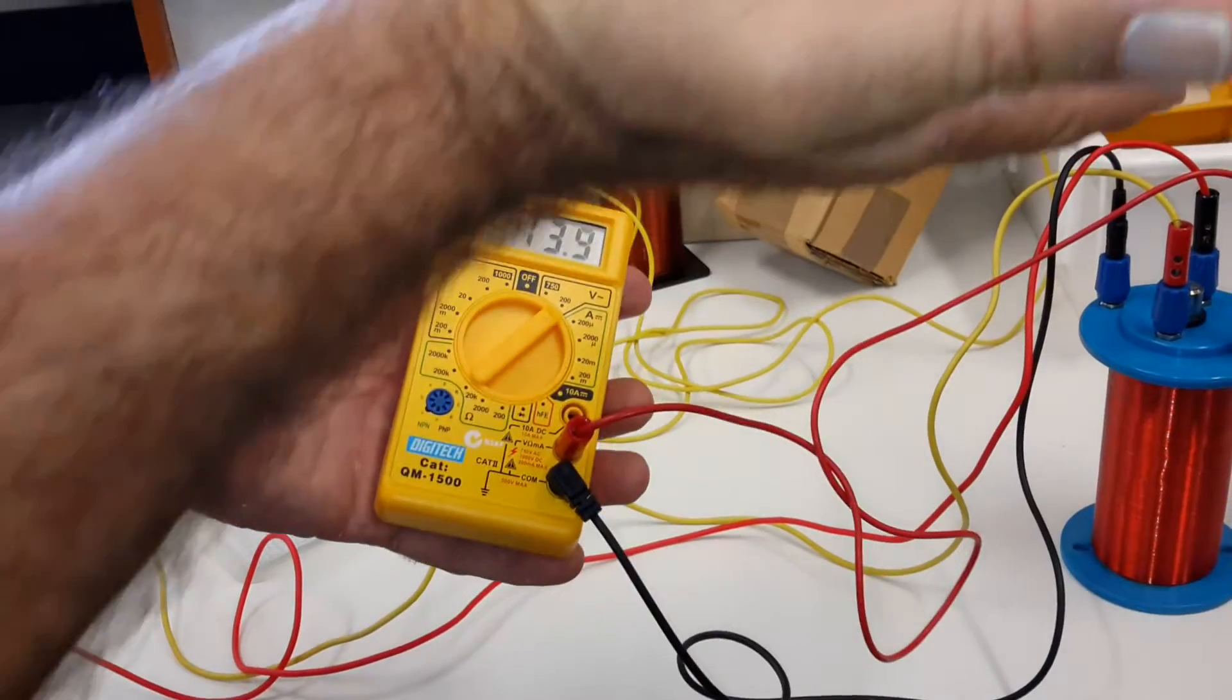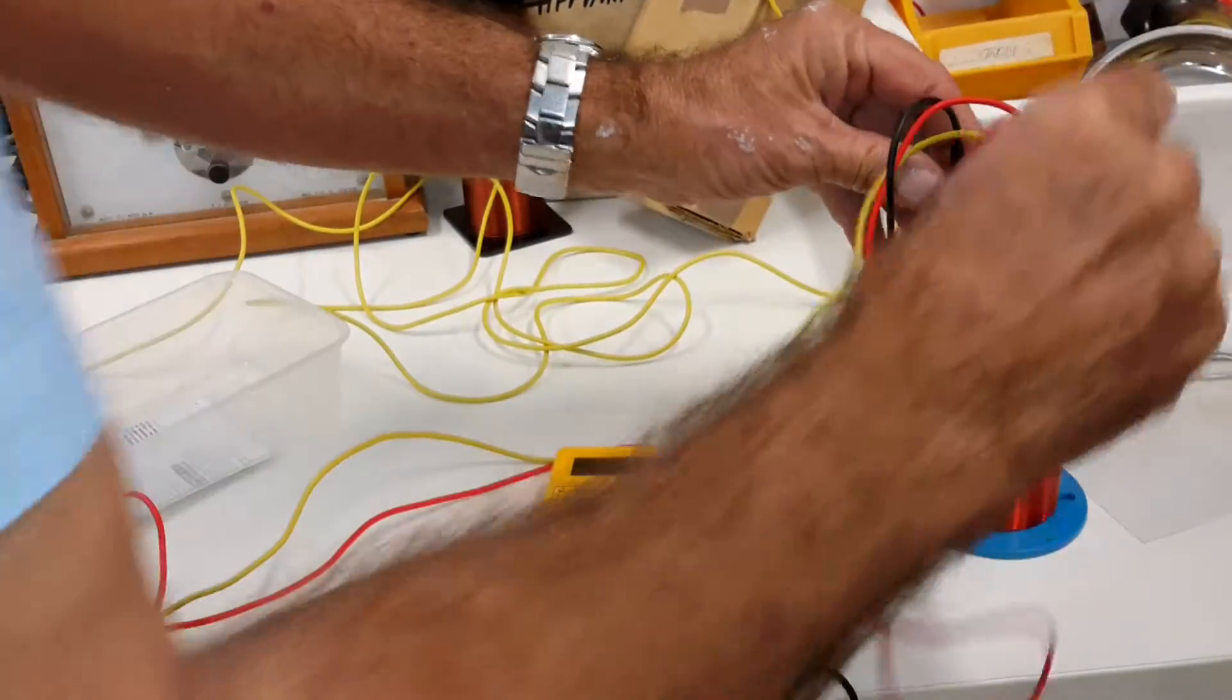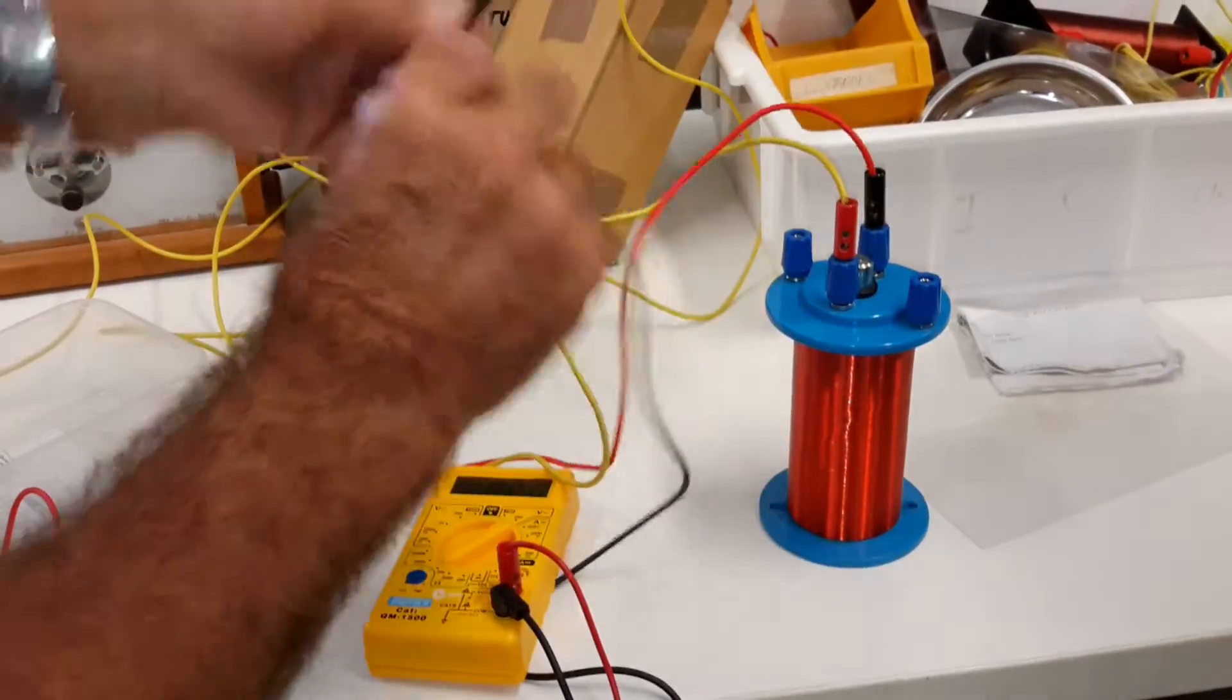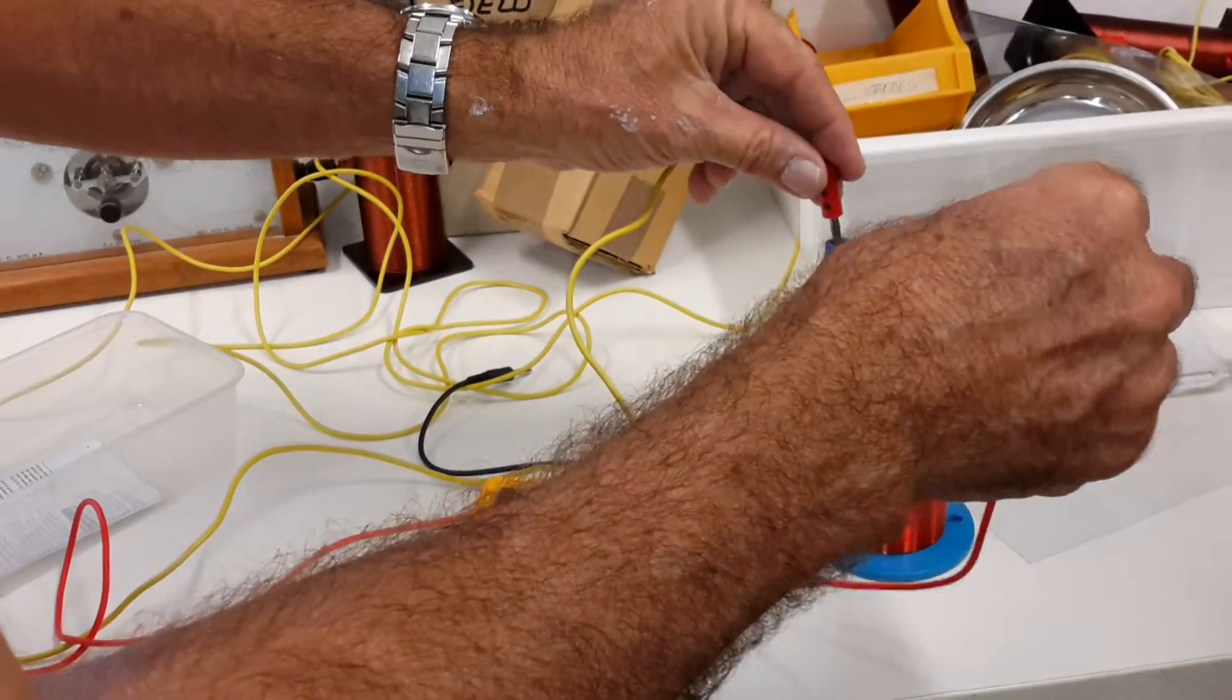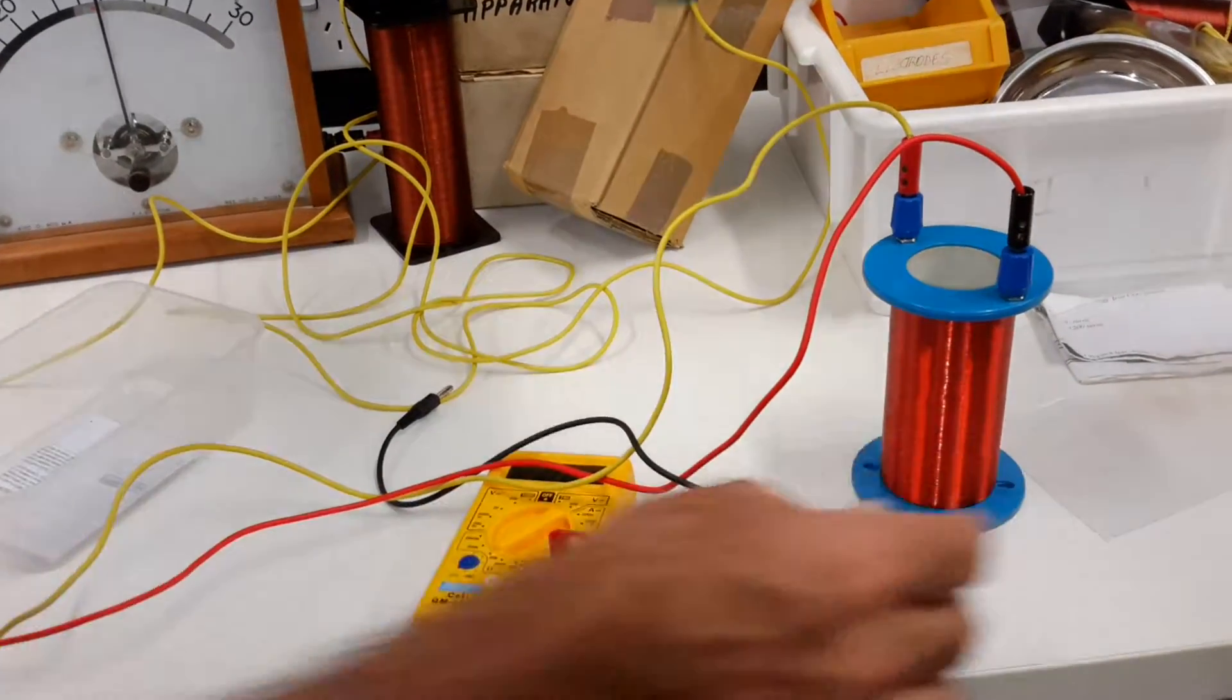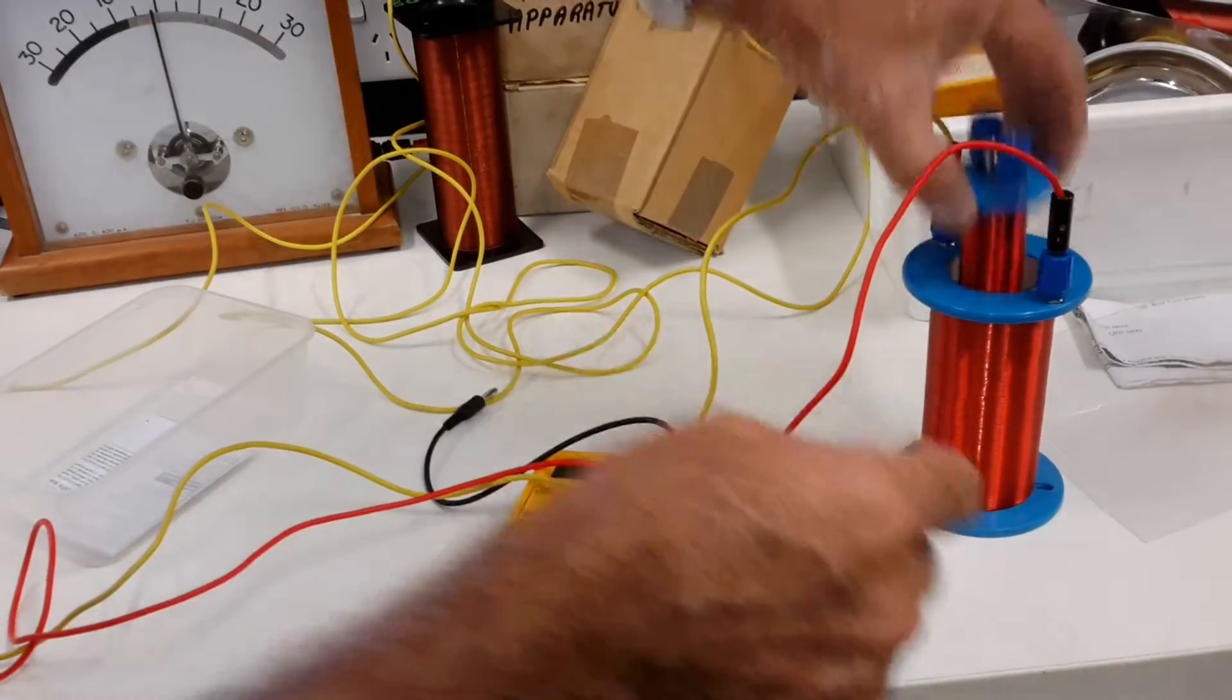So when a transformer, as the voltage goes up in one coil, the current comes down. Now, if we swap those around and put the input voltage into that coil there that has many, many turns, we'll see what happens and see what voltage comes out of that secondary coil.